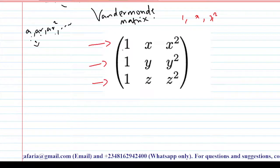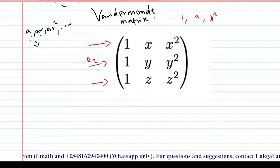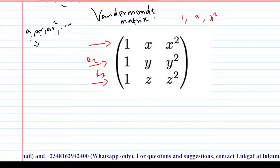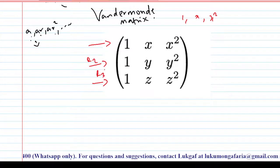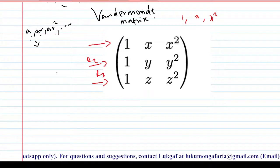If you check the first row, for example, we see that we have 1, x, x squared. If you observe very carefully, you will notice that it is a row with the terms of a geometric progression, because we have a common ratio between the two successive terms. Likewise for the second row and the third row. So that's an example of a Vandermonde matrix.